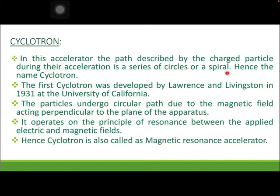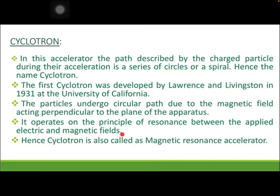The first cyclotron was developed by Lawrence and Livingston in 1931 at the University of California. The particles undergo a circular path due to the magnetic field acting perpendicular to the plane of the apparatus. In addition to the electric field, a magnetic field is also applied so the path of the particle becomes spiral, with the necessary centripetal force provided by the magnetic field. It operates on the principle of resonance between the applied electric and magnetic field, hence it is also called the magnetic resonance accelerator.